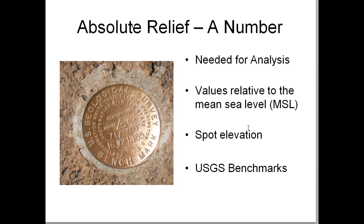There are lots of ways that absolute relief is shown on a map. Often you see it as a spot elevation or a USGS benchmark. Sometimes you can see absolute relief in brass caps — for example, 717 feet from a US survey benchmark. Usually when we're talking about absolute relief, we mean so many feet or meters above average sea level, and that number is critical for high-level analysis.